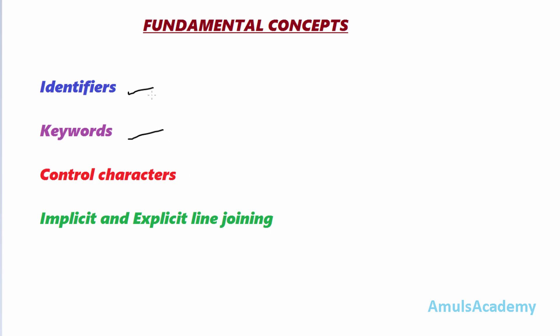Identifiers are nothing but the names which are used in our program — for example, variable names, function names, etc. Identifiers can contain letters,